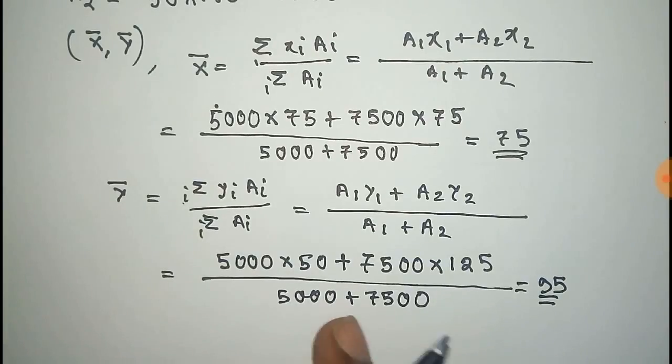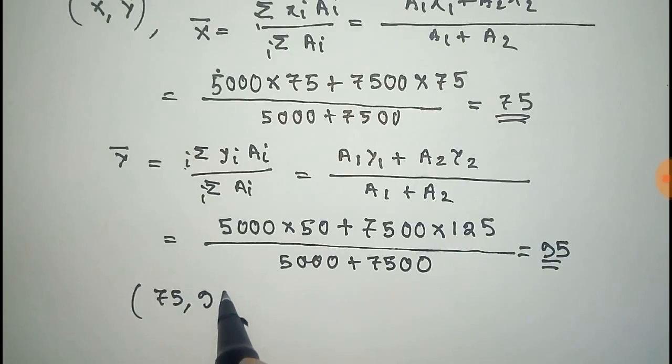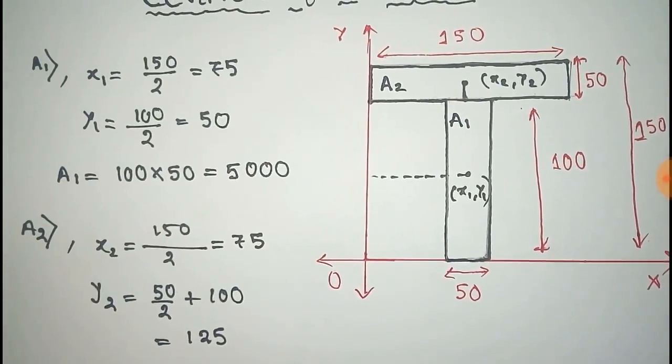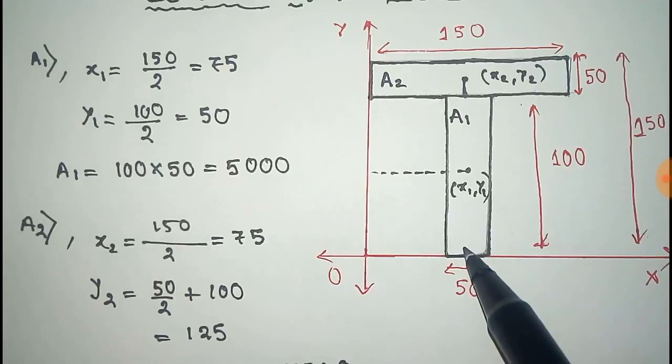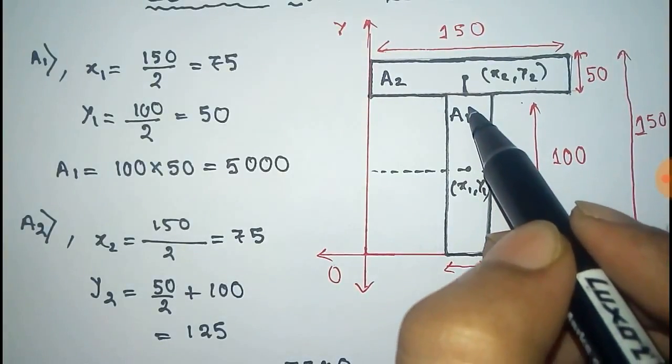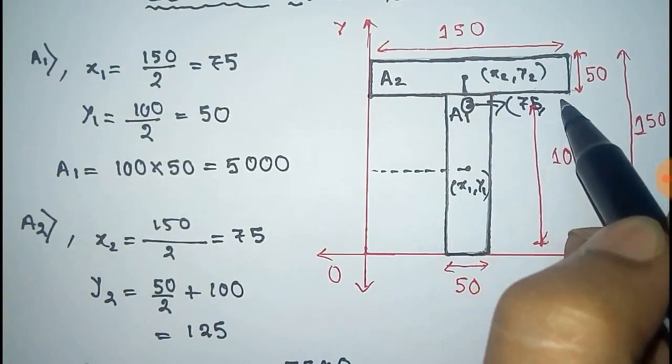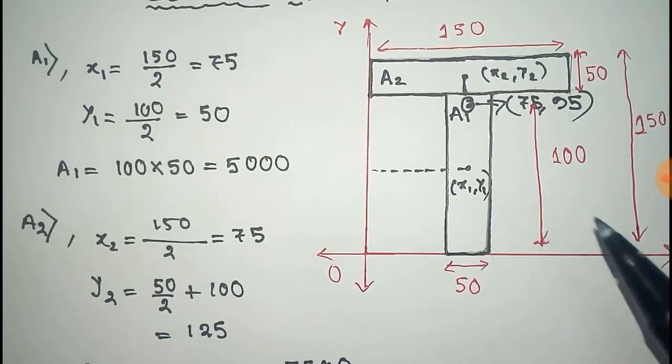Now we have to locate this point on our shape. It will be like this - it is at 75, 95, which will be like this point. This is the 75, 95 point. Thus we get the centroid of this I-section.